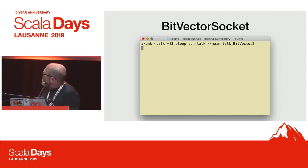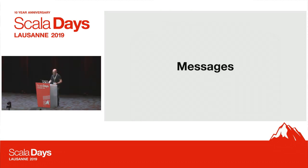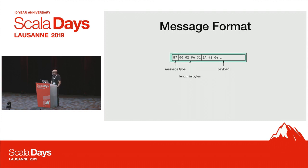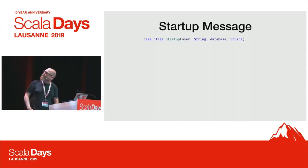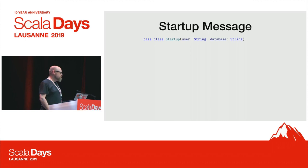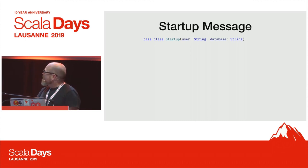We run this and it works. It's the same as before but now we have a better API because we're talking in BitVectors and can start encoding messages. So let's talk about messages again — there's a tag and a length-prefixed payload. When you connect to Postgres you open a socket and the first thing you do is send a startup message. For now we're just going to send the username and the database in our startup message, and if security is set up in a lax way it'll say okay you're logged in.